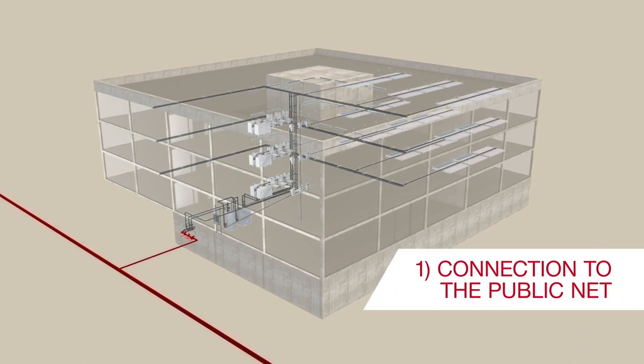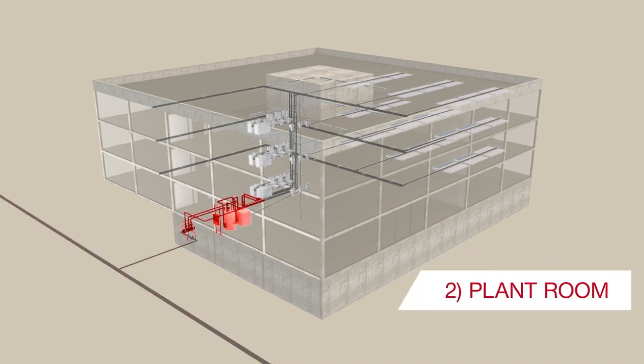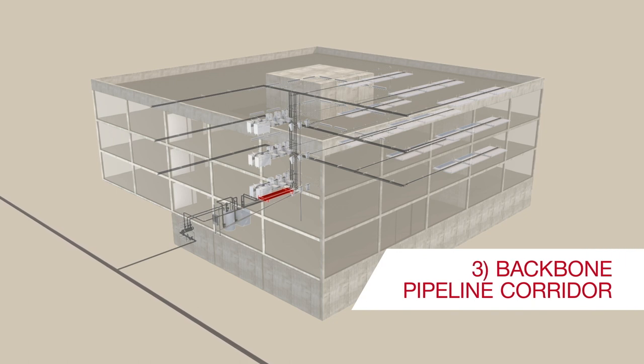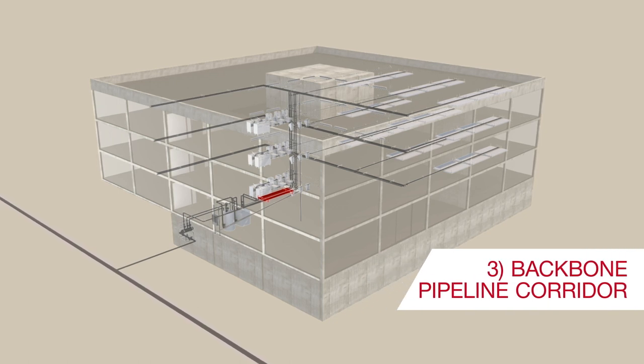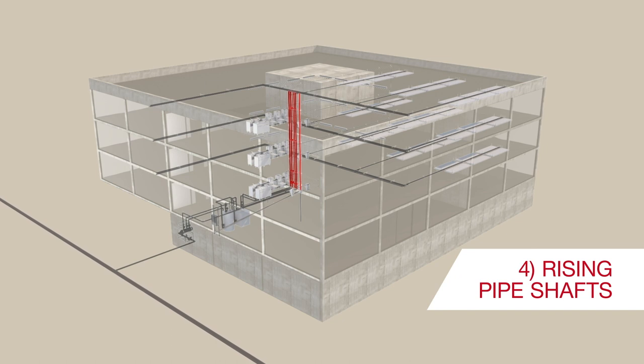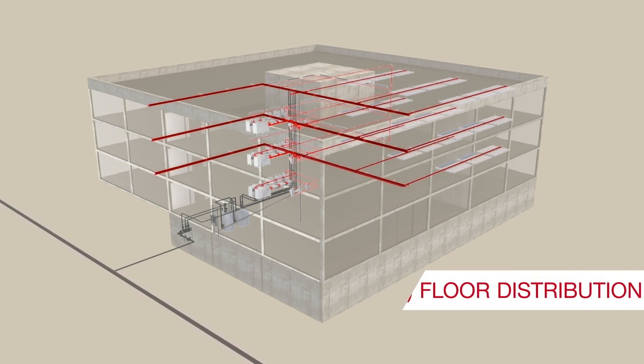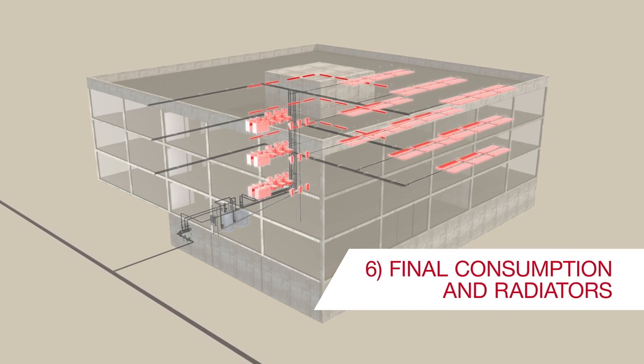Connection to the public net. Plant room. Backbone pipeline corridor. Rising pipe shafts. Floor distribution. Final consumption and radiators.